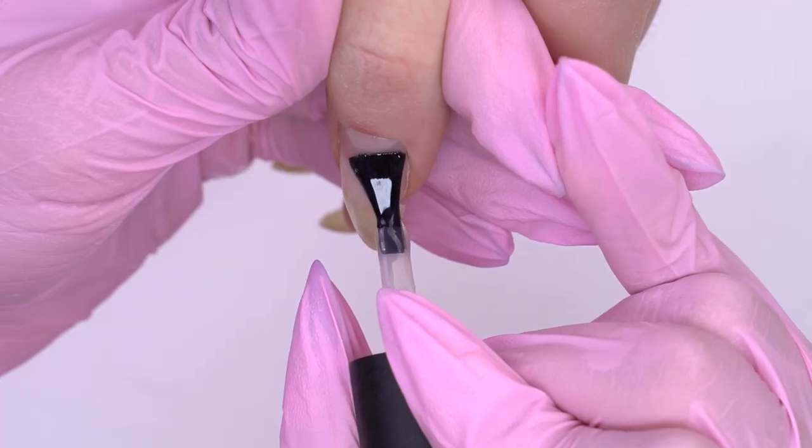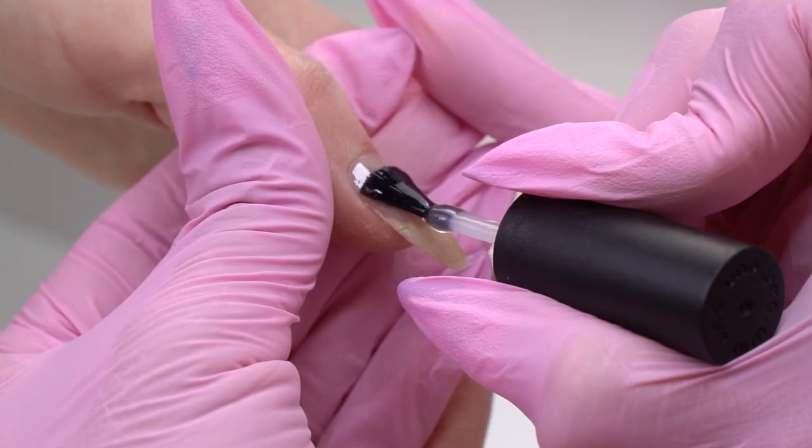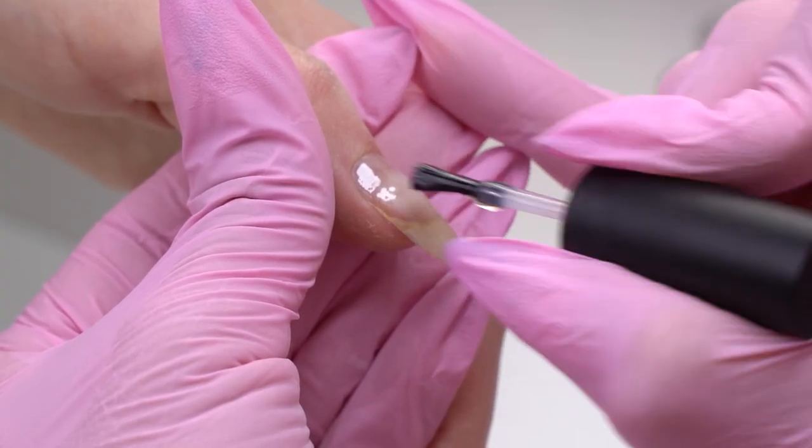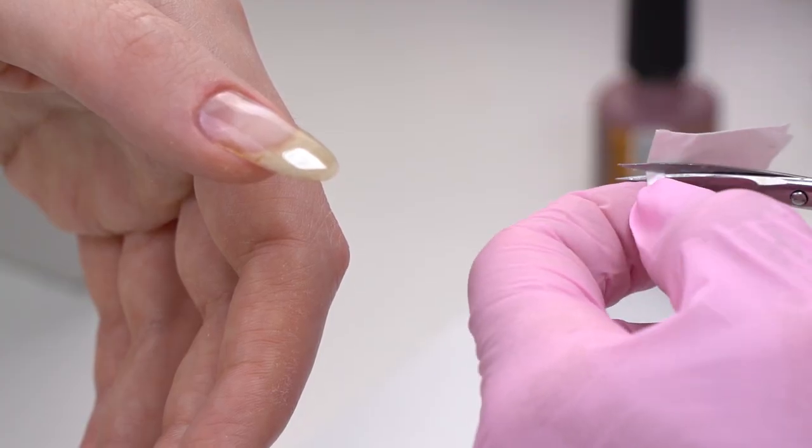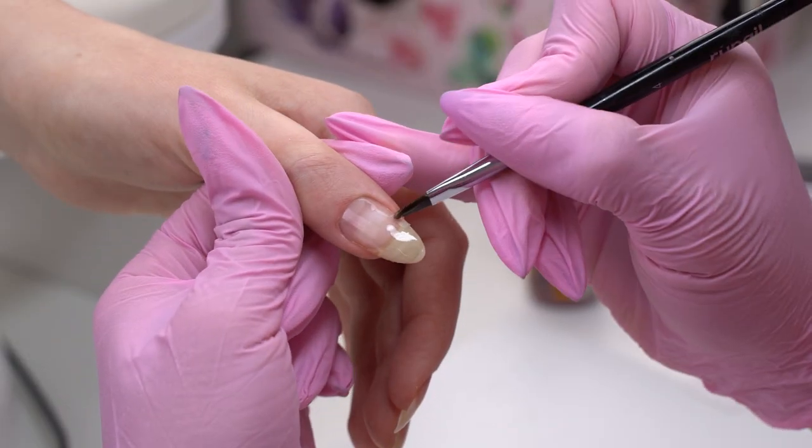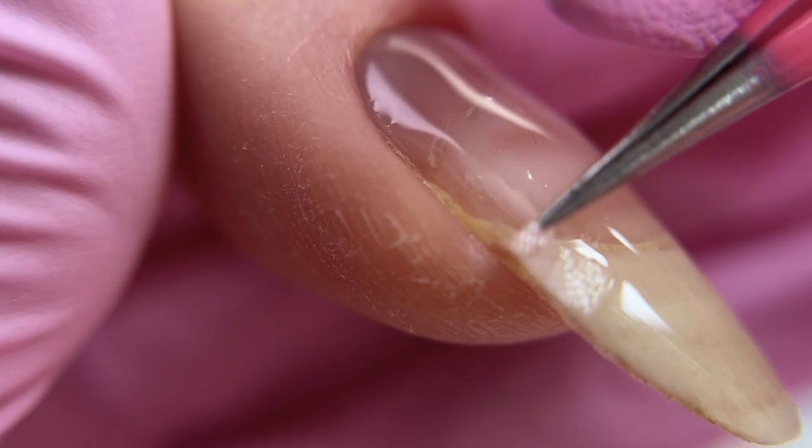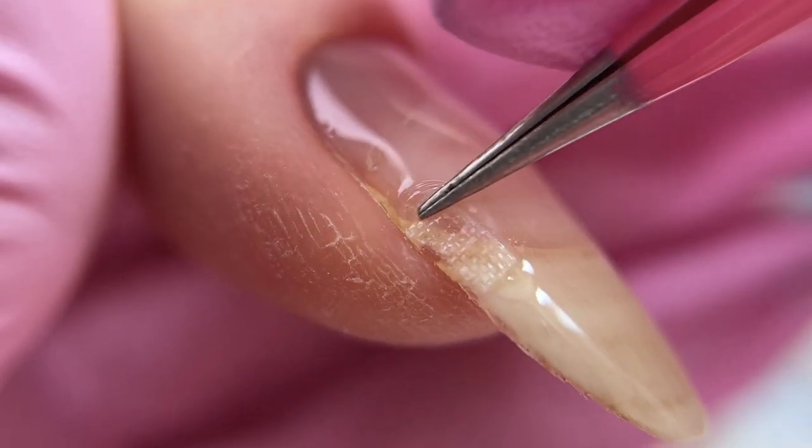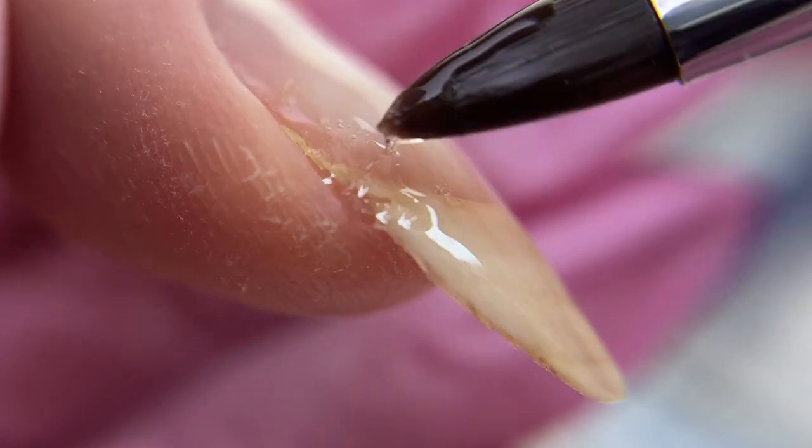We will have to repair these cracks first. I apply the same rubber base coat. Then on the wet base coat layer, I lay out a tiny piece of nail silk. I drown it in the base coat using tweezers and then soak it with some base coat using another brush. It should become clear.